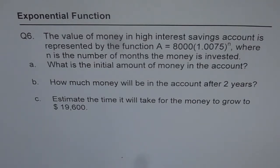The question is: the value of money in high interest savings account is represented by the function A equals 8,000 times 1.0075 to the power of N, where N is the number of months the money is invested. Part A: what is the initial amount of money in the account? Part B: how much money will be in the account after 2 years? And Part C: estimate the time it will take for the money to grow to $19,600.